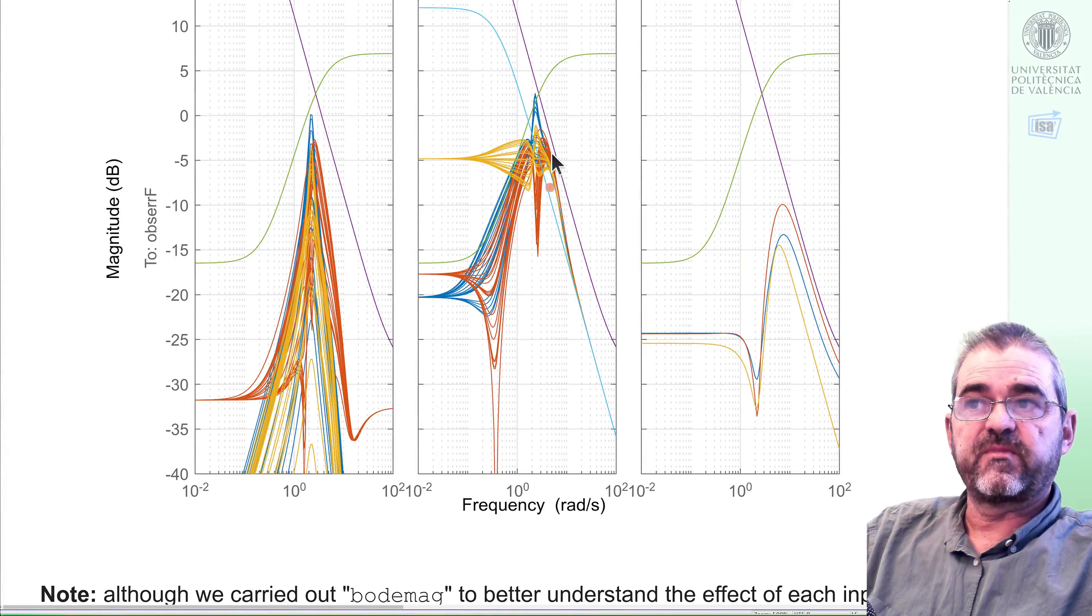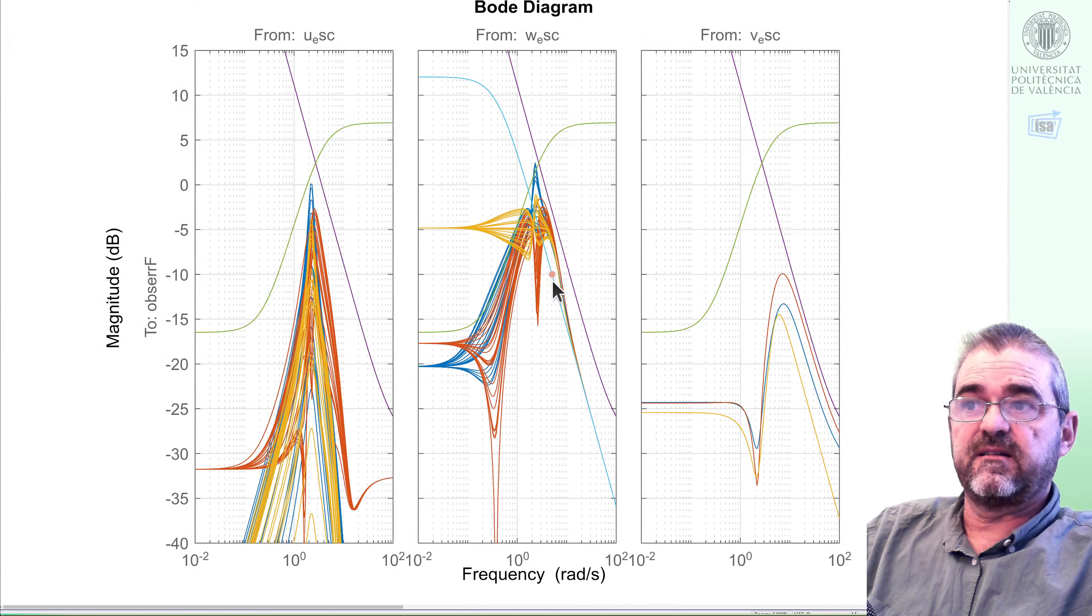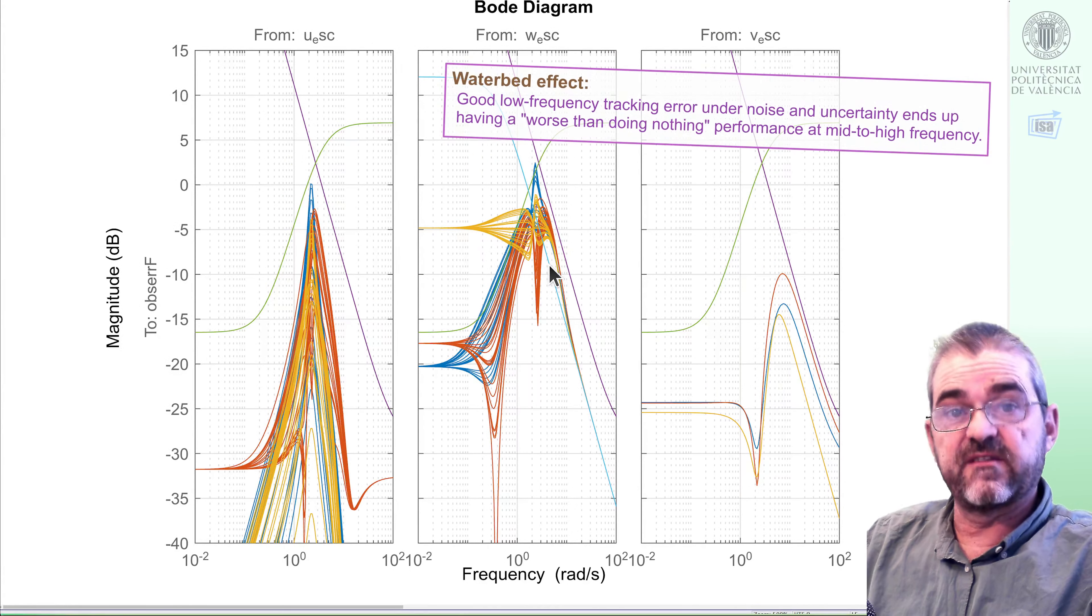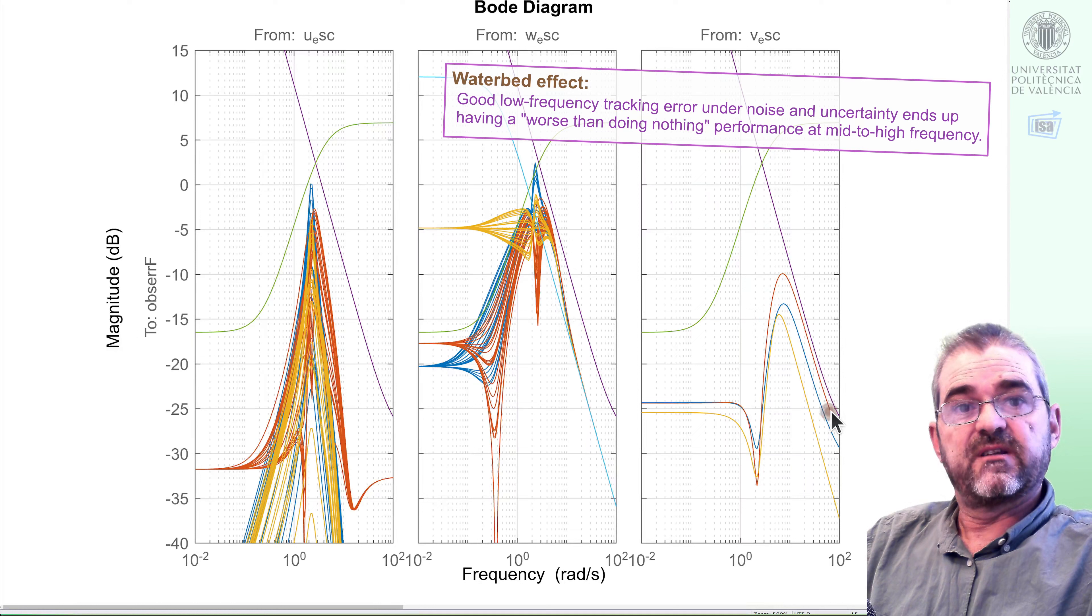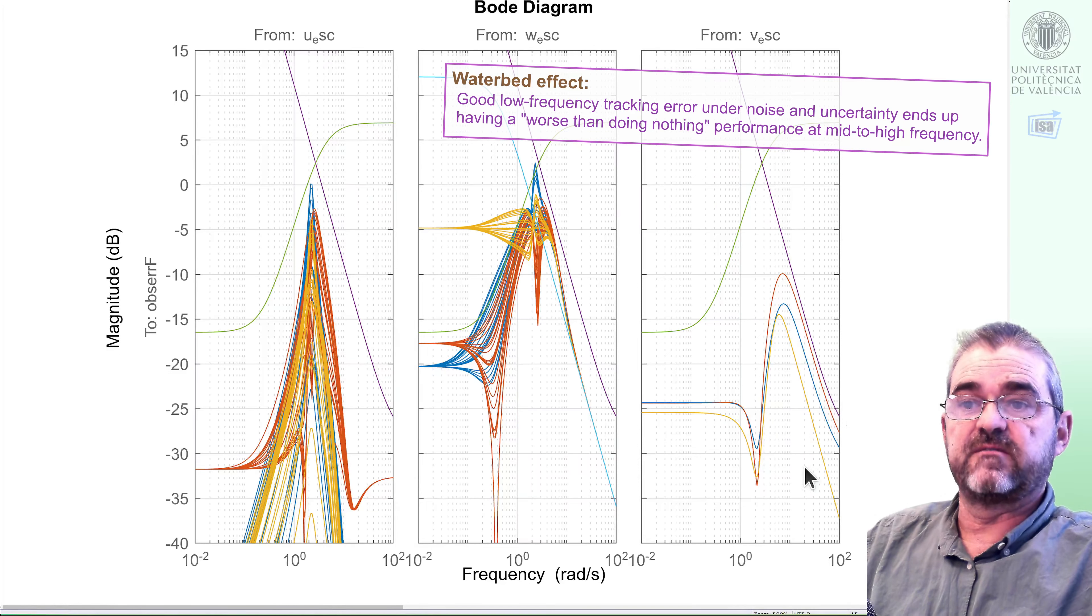This is this region of bode diagrams in which indeed the estimation error is above the cyan line, which is the actual force frequency content. This is sort of a waterbed effect. In order to be so good at low frequencies, it seems that we need to be quite bad at these intermediate frequencies. So error is more than 100% in relative terms. And also, mu synthesis needs to be the worst at high frequencies, because taking into account modeling error needs a higher gain observer.